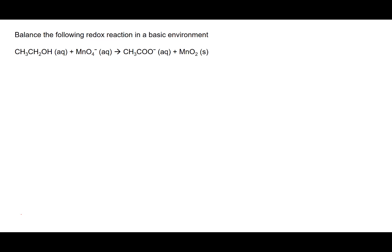In this video, we're going to balance a redox reaction in a basic environment and talk through the steps on how to approach that. The reaction is ethanol in a basic environment together with permanganate, MnO4-, to form the acetate ion, CH3COO-, and MnO2.